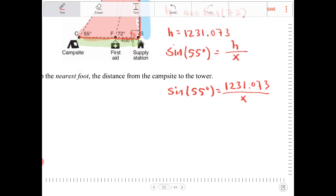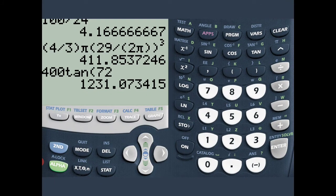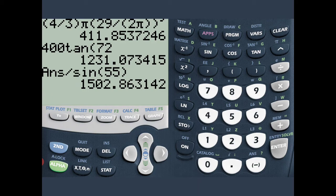And now I can solve for X. I'm going to multiply both sides by X. So I get X sine of 55 is equal to 1231.073. Let's divide both sides by sine 55. X will equal to 1231.073 over sine 55. Let's enter that into the calculator. So the value that I got a moment ago on the calculator, it's still saved there. I want to divide this by sine of 55 degrees.